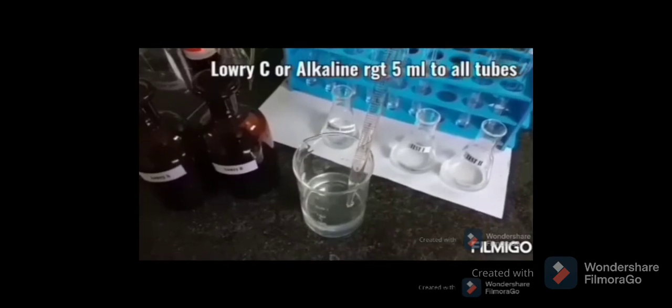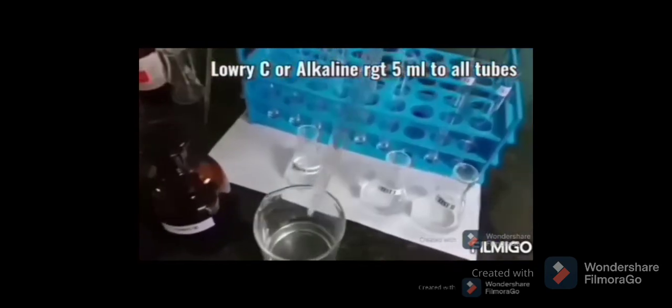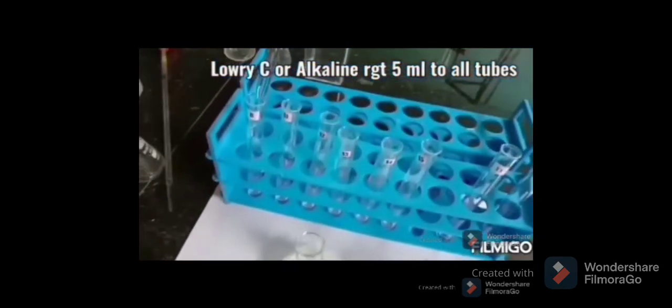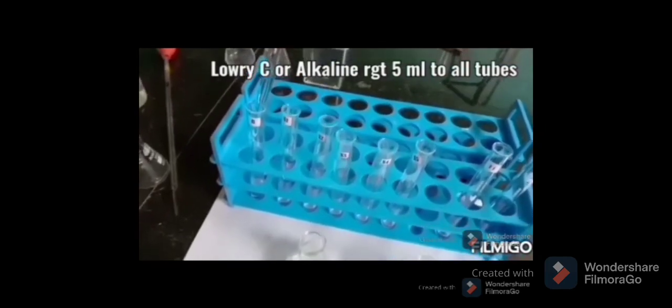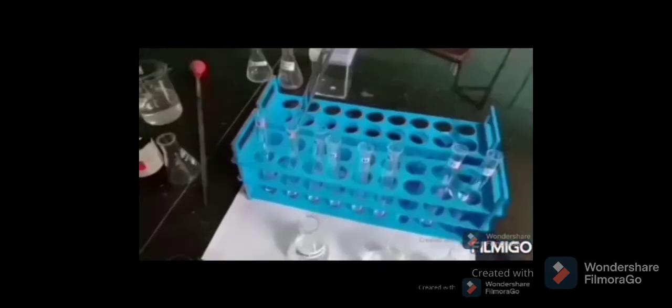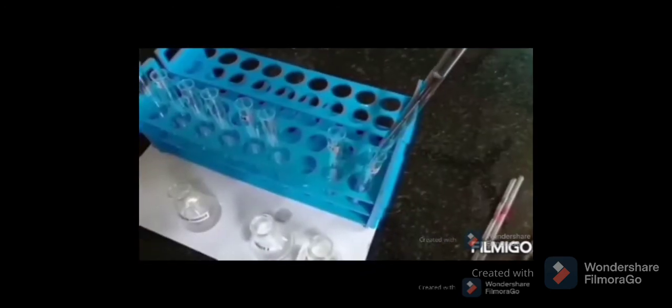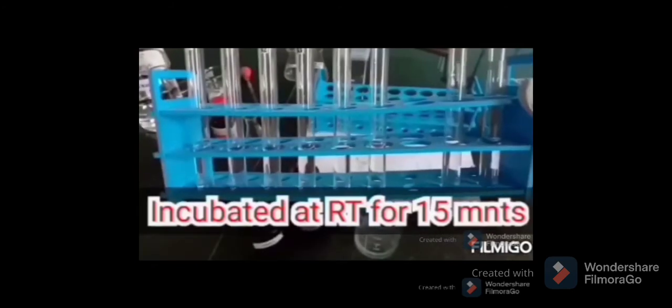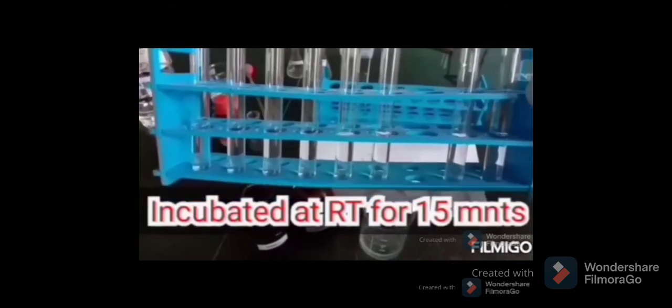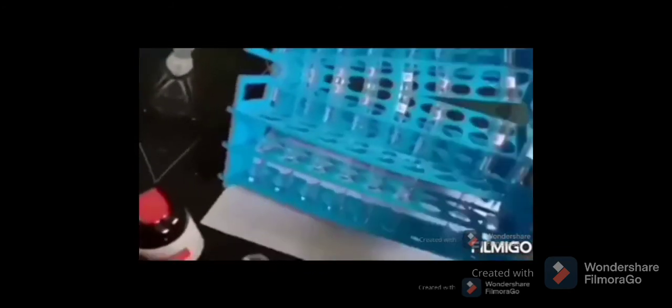Now 5 ml of alkaline reagent, Lowry C, is added to all tubes. Lowry C is prepared fresh by mixing 50 ml of Lowry A with 1 ml of Lowry B. This makes a total volume of 7 ml in all test tubes and this is incubated at room temperature for 15 minutes.